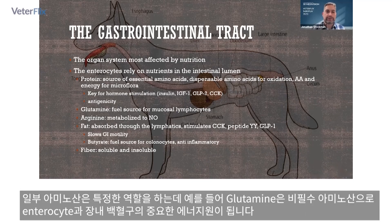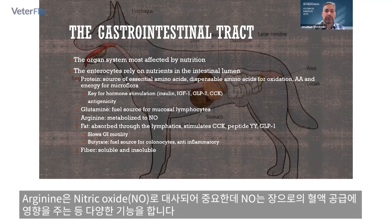Several amino acids have specific roles. For example, glutamine is a non-essential amino acid that is an important fuel source for both the enterocytes and the lymphocytes in the intestines. Arginine is important because it is metabolized to nitric oxide, which has various functions, including affecting the blood supply to the intestines.